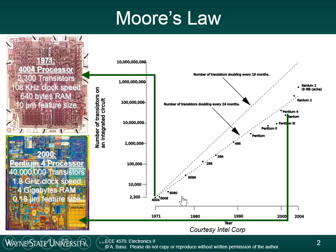Back in the 1970s, this was one of the first microprocessors that Intel released. It had about 2,300 transistors on it, and those transistors were slow by today's standards. The clock speed — the speed at which they could be turned on and off — was around 108 kilohertz. The amount of memory was quite small, and they were about 10 micrometers in size.